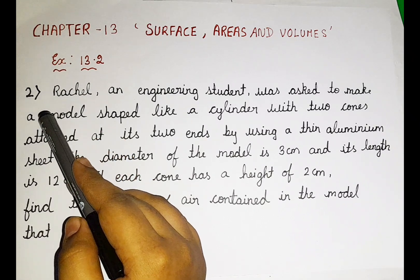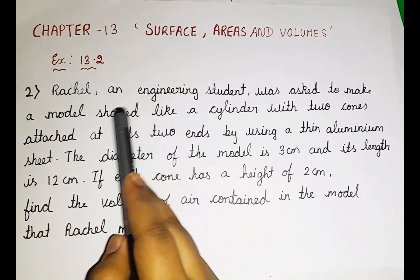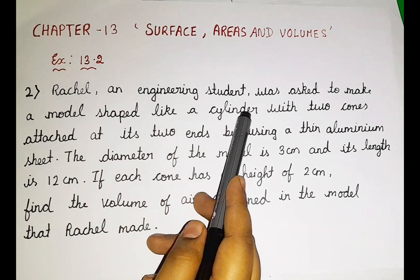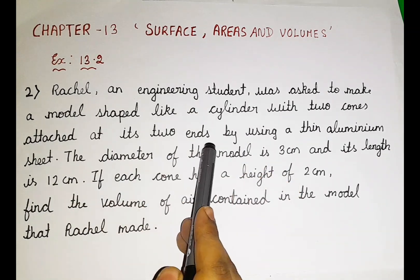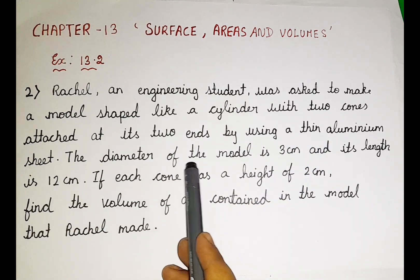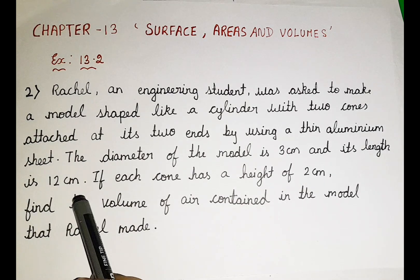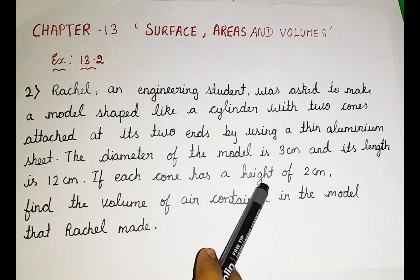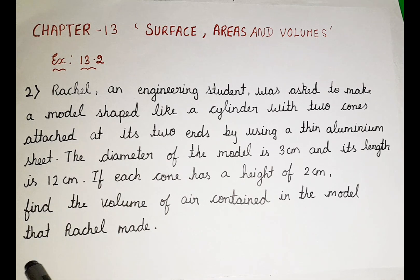So let us read the question. Rachel, an engineering student, was asked to make a model shaped like a cylinder with two cones attached at its two ends by using a thin aluminum sheet. The diameter of the model is 3 centimeter and its length is 12 centimeter. If each cone has a height of 2 centimeter, find the volume of air contained in the model that Rachel made.